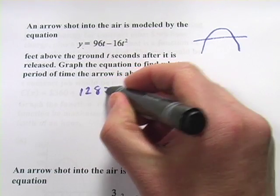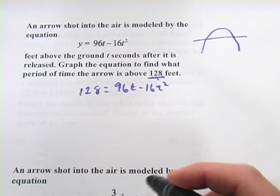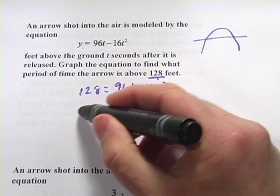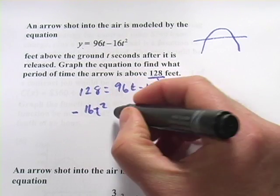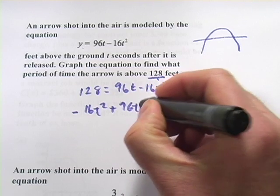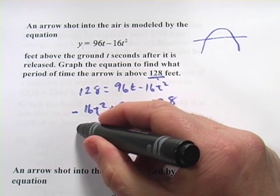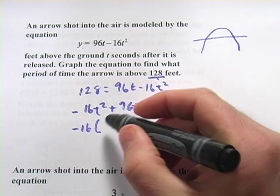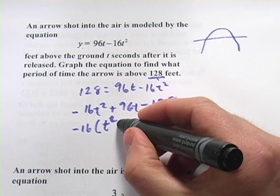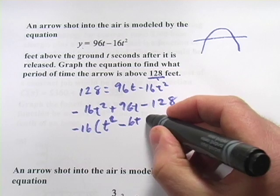So let's try that. We have 128 equals 96t minus 16t squared. We can rearrange this a little bit to get negative 16t squared plus 96t minus 128. I think there's a factor of 16 in there. If you took a negative 16 out of there, you would get t squared minus 6t plus 8.